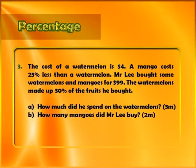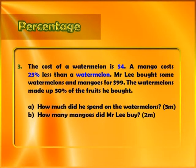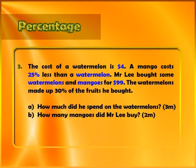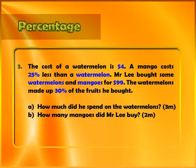The cost of a watermelon is $4. A mango costs 25% less than a watermelon. Mr. Lee bought some watermelons and mangoes for $99. The watermelons made up 30% of the fruits he bought. This looks complicated — let's see if we can draw a model and solve it. We'll get a blank page and see how we can solve this.